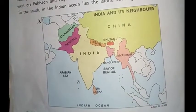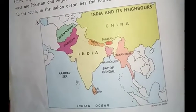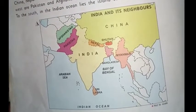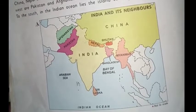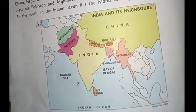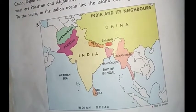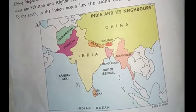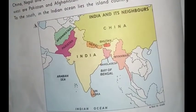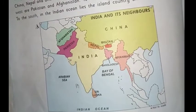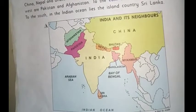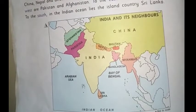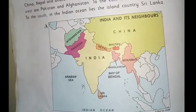The next topic is political divisions. India's capital is New Delhi, and our country is divided into 28 states and 9 union territories for administrative purposes. This means that one person cannot see or run the whole country, and that is why our country is divided into many parts.